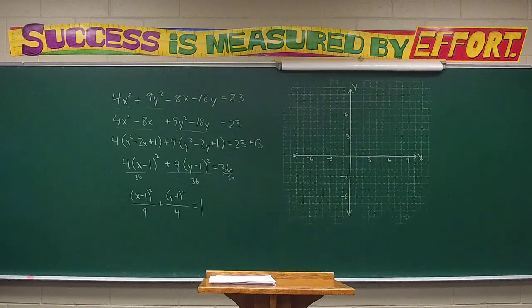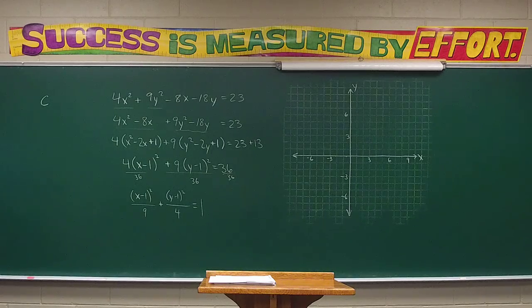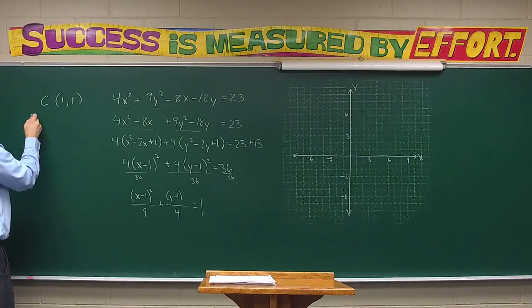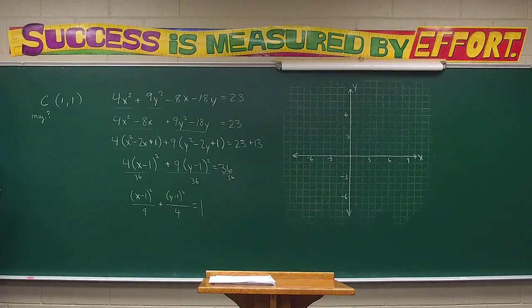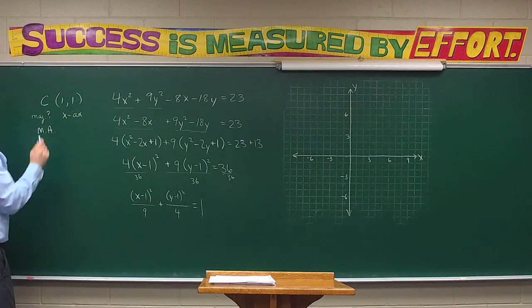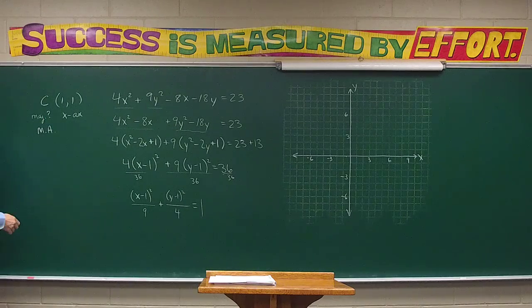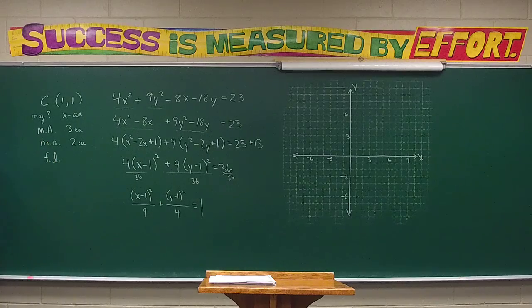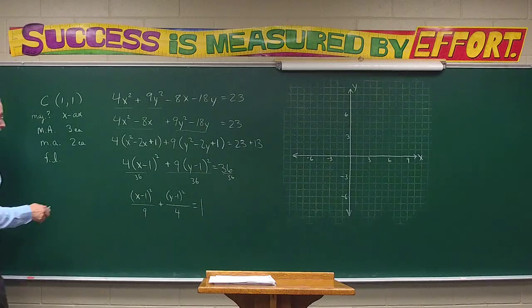We can go ahead and analyze this equation. Where's the center of the ellipse? The book will say 'translated origin' — that's technically what we're doing — but the center is at the origin, so the translated center is at (1, 1). Which axis is major? The x-axis — that's the bigger denominator. How big is each side of the major axis? Three each. For the minor axis, two each. Focal length: c equals the square root of a squared minus b squared, so in this case it's the square root of five, approximately 2.2.